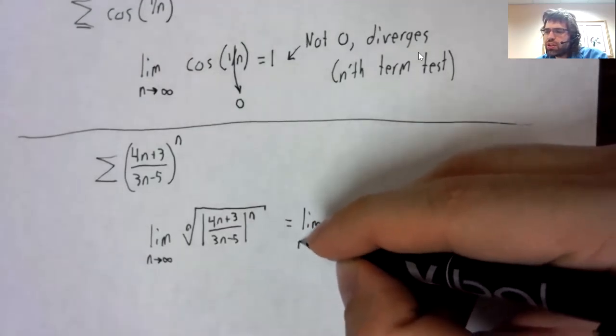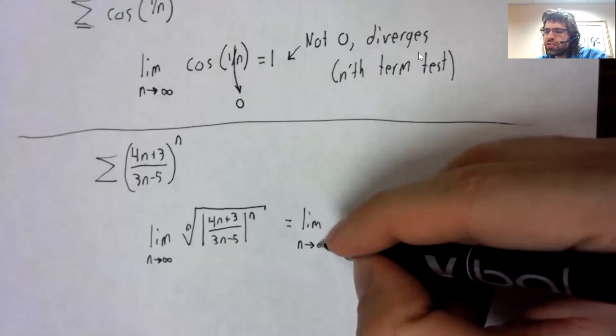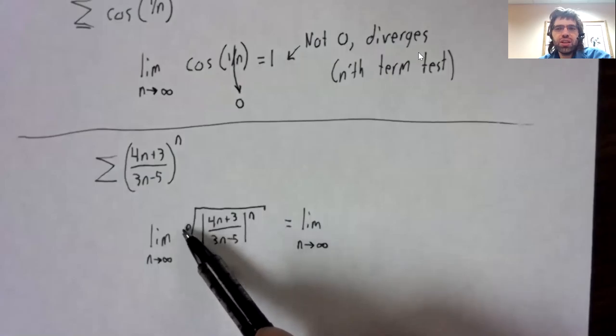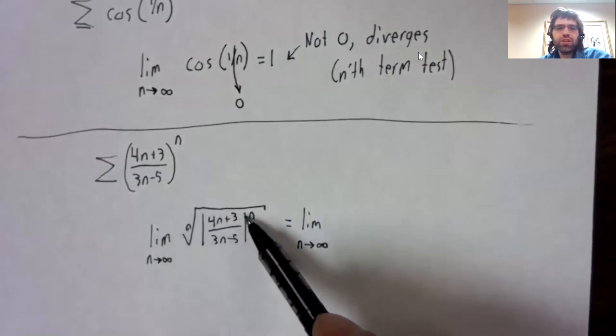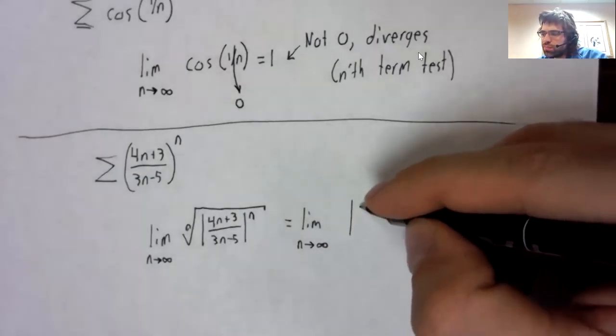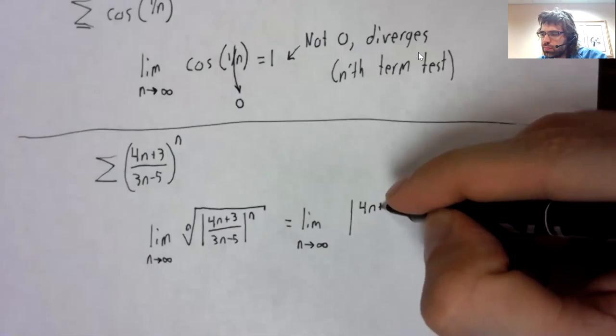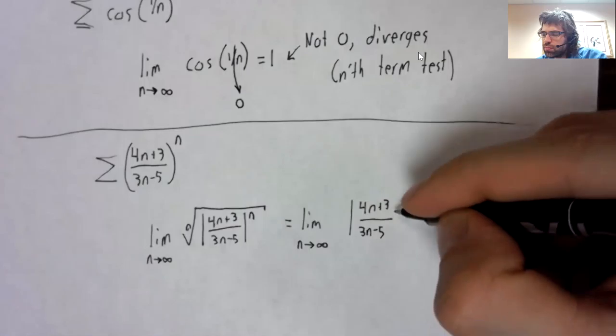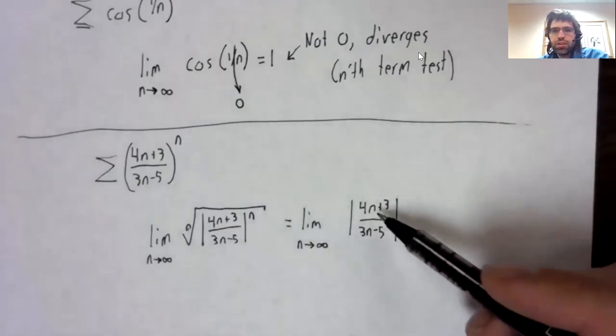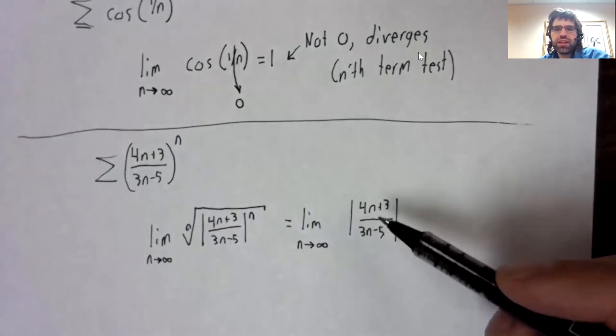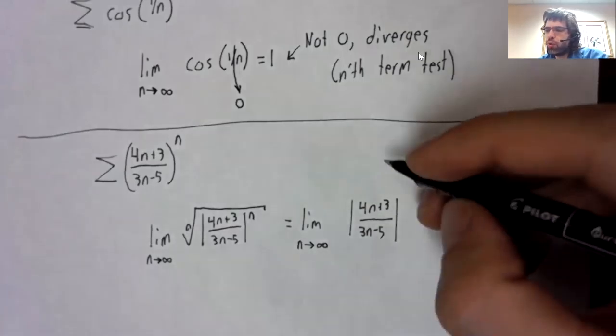And the nth root and the n cancel each other out. The reason we don't use the root test a lot is that it's usually hard to deal with an nth root. But here we just have cancellation.